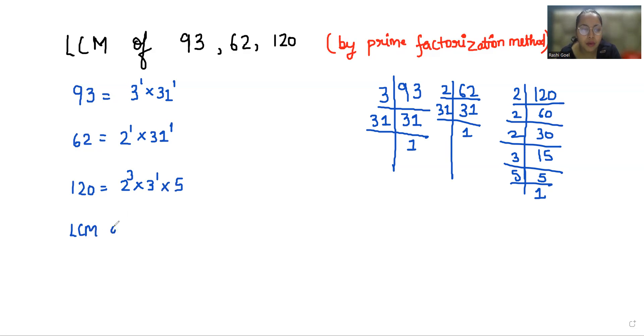Now LCM of 93, 62 and 120. The product of all the prime factors of given numbers taken once with their highest power is their LCM.